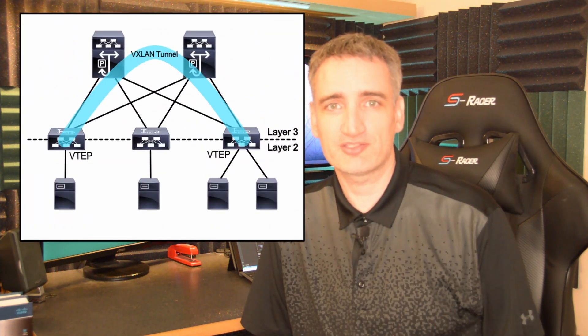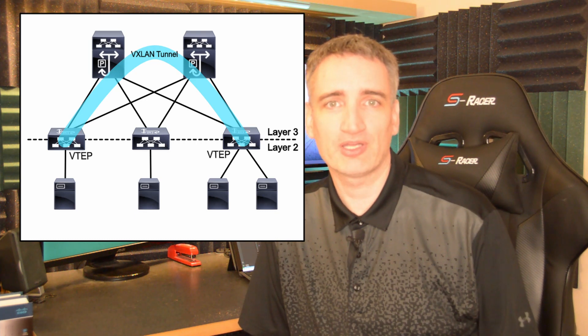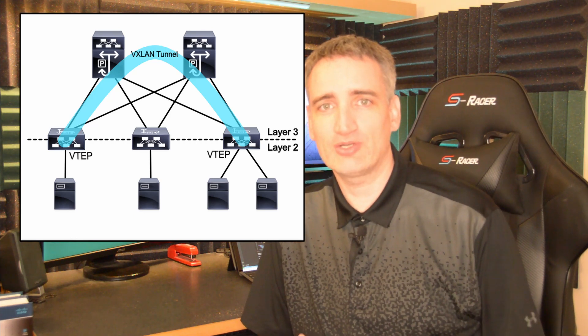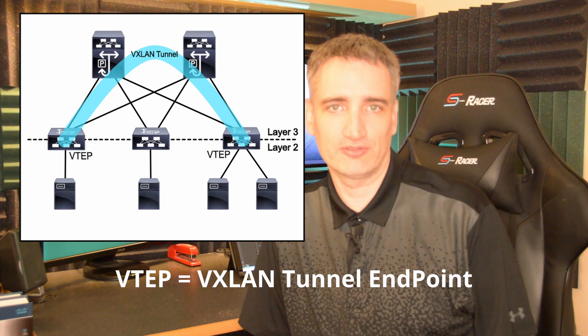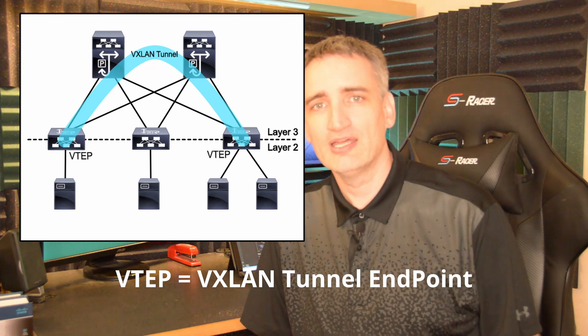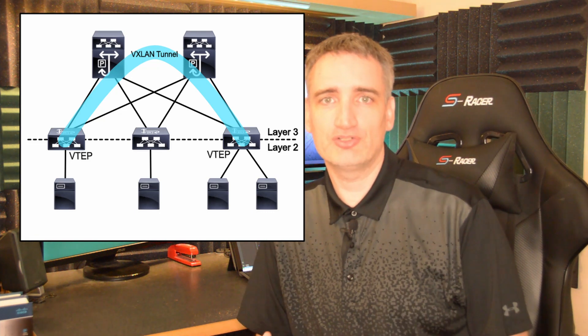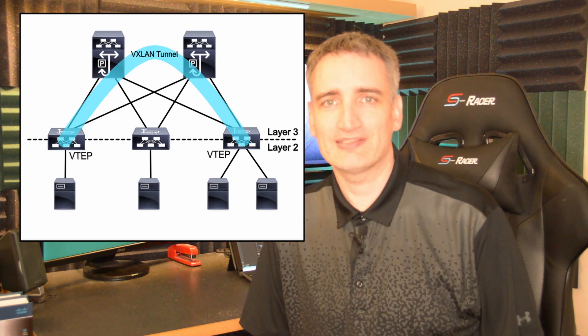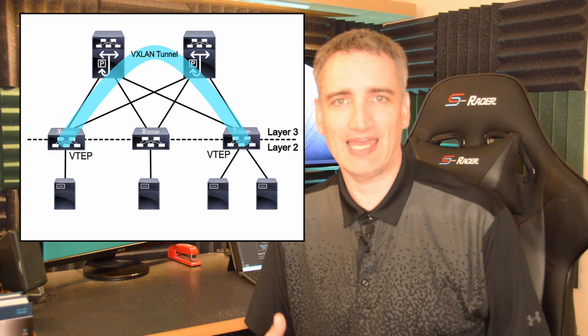So how does VXLAN work? The simple explanation is that when traffic in a VXLAN network needs to cross a layer 3 boundary, the switches at each end create VPN tunnels across that network. The switches at each end create what are called VTEPs, which stands for VXLAN tunnel endpoint. When they put the traffic through that tunnel, they take the MAC frame from the layer 2 network and encapsulate it in a UDP IP packet. This is also referred to as MAC in UDP encapsulation.